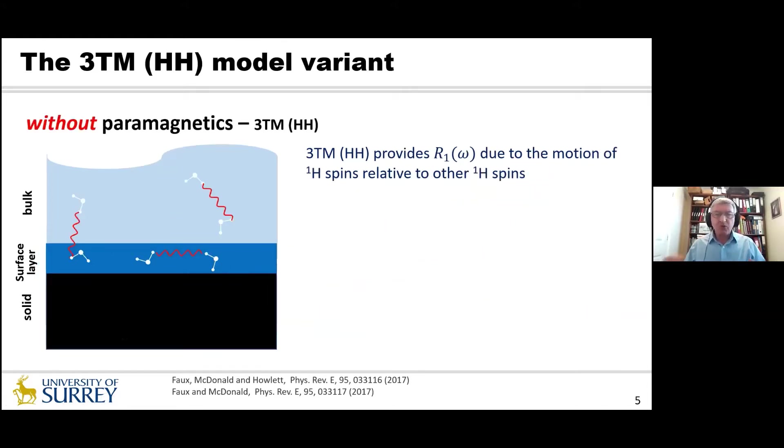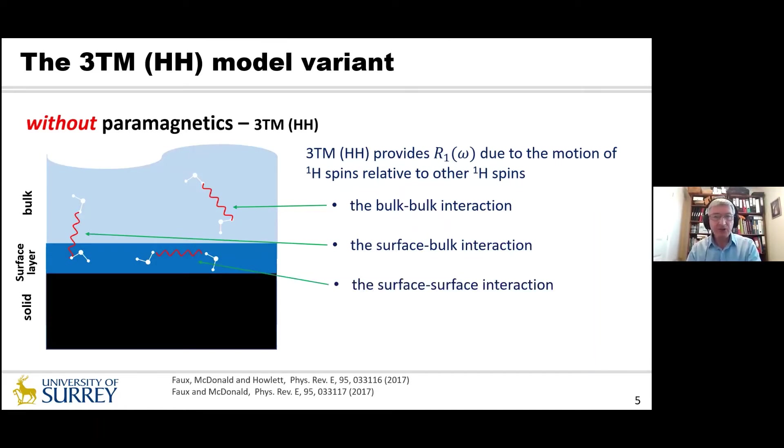The second version which is both of these are contained within the available software is the system without paramagnetics. So again we're talking about modeling the relative motion of pairs of spins but in the fluid there are these two environments bulk and surface layer and we have to consider these pairs of interactions separately. So one of these again is the bulk interaction, the interaction between one bulk spin on a water molecule with that of a proton on another water molecule. The surface bulk interaction where one of the water molecules is in the slow moving surface layer and of course the surface surface interaction.